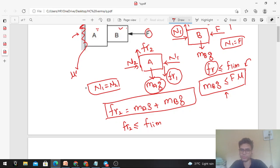So FR2 is MA plus MB into G. That should be less than or equal to the limiting friction. What is the normal reaction between them? N2. N2 is equal to N1, and N1 is equal to F. So again, F into mu dash. So this is the condition.